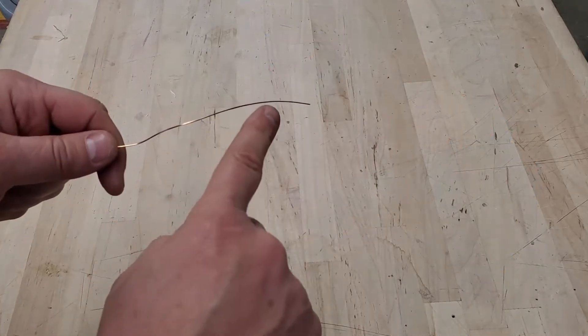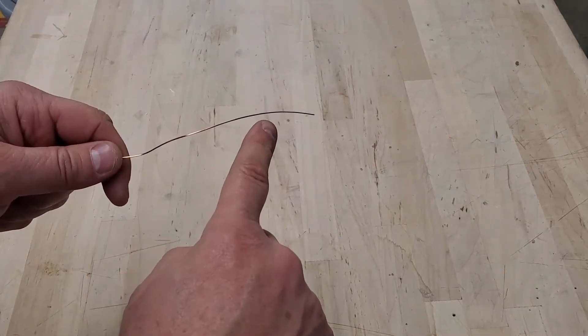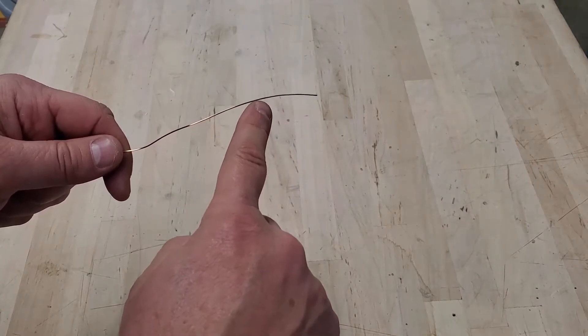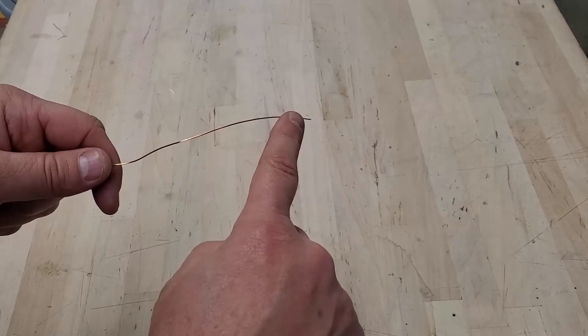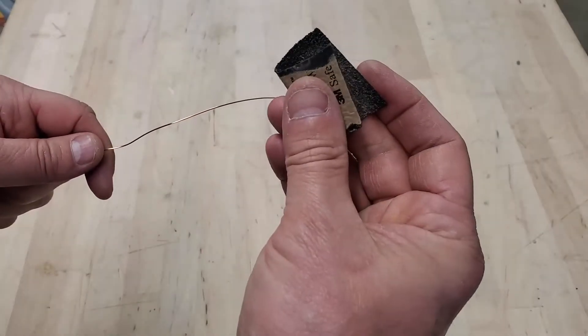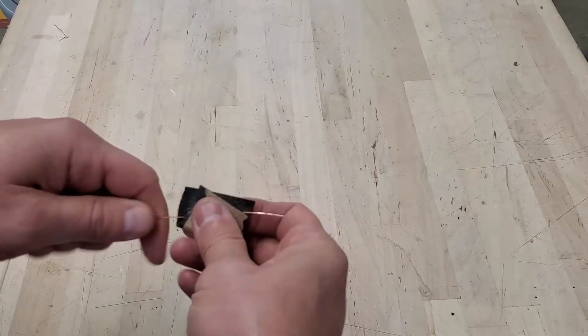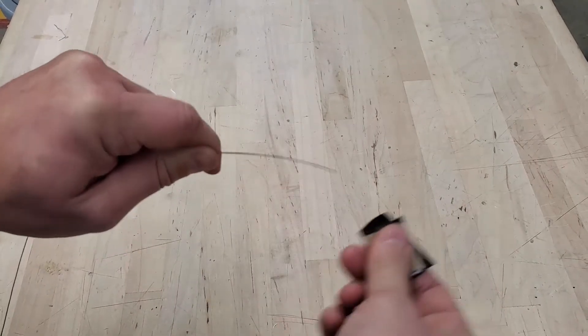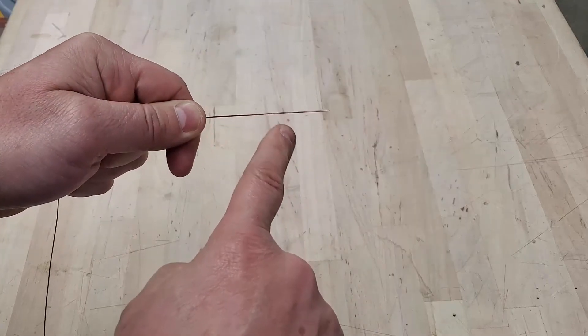So the first thing you're going to want to do is measure out about four and a half meters or yards of this magnetic wire. This magnetic wire has a plastic coating, so what you're going to want to do is remove about two inches or so of this plastic coating using a small piece of sandpaper. You're going to want to do this on both sides of your wire.